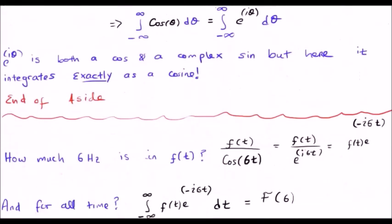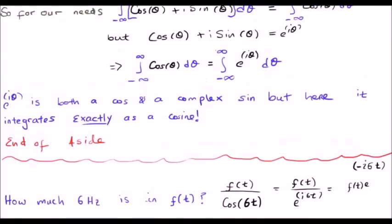So now it's time to go back to our question. How many 6 Hertz signals are there in our function f of t? Well, let's divide our function f of t by cosine of 6 Hertz.